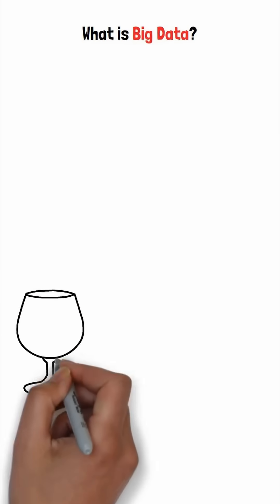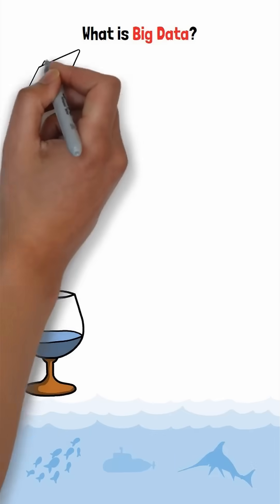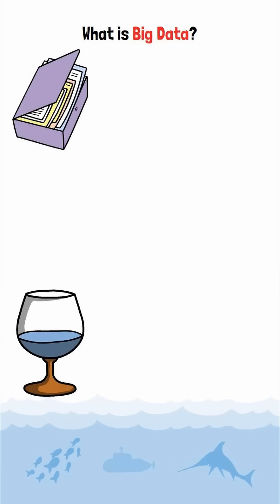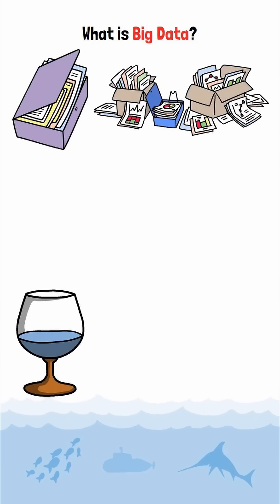What is big data? If regular data is a glass of water, big data is the entire ocean. It's not just about having more information, it's about having so much information that traditional tools can't handle it.